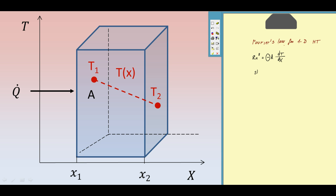For steady-state condition, where our temperature gradient is linear, we can write dT over dx is T2 minus T1 over x2 minus x1, where this is the length of our solid.